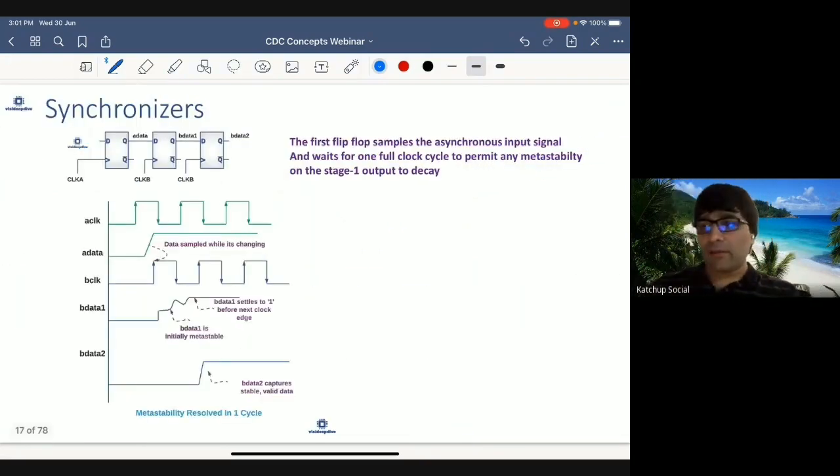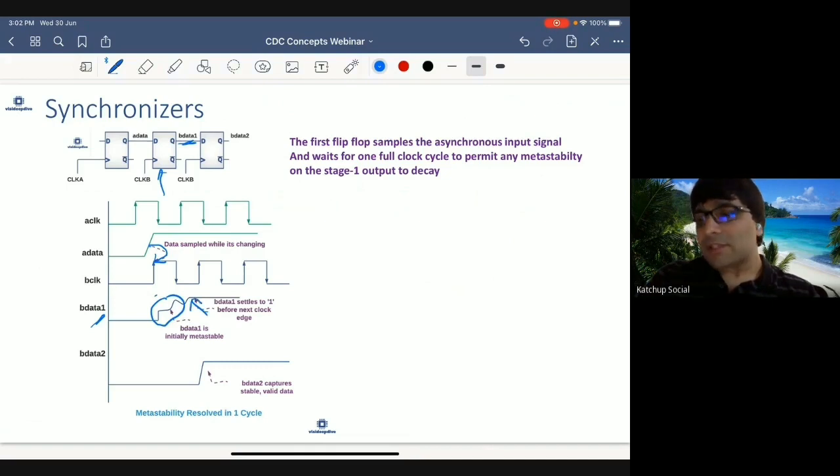Now, how does this synchronizer behave? How does it neutralize the metastability? Let's take multiple examples to understand that. So here, data is changing very close to clock edge. Now, what happens because of that is, with this flop, B data 1 here will become metastable. So B data 1 became metastable here. After some time, B data 1 here stabilized and settled to value 1.